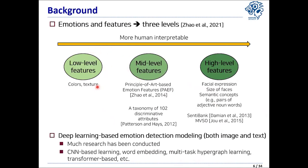When it comes to research on emotions, there are roughly three levels of emotion features. First, low-level features include colors or textures, which somewhat lack reasonable interpretation. Second, mid-level features are more human-interpretable; examples include TAEF, a taxonomy of 102 discriminative attributes. Lastly, high-level features present the semantic information of images, which are more interpretable by humans — examples include facial expression, size of faces, and pairs of adjective-noun words. In addition, recent research has used deep features by employing machine or deep learning.